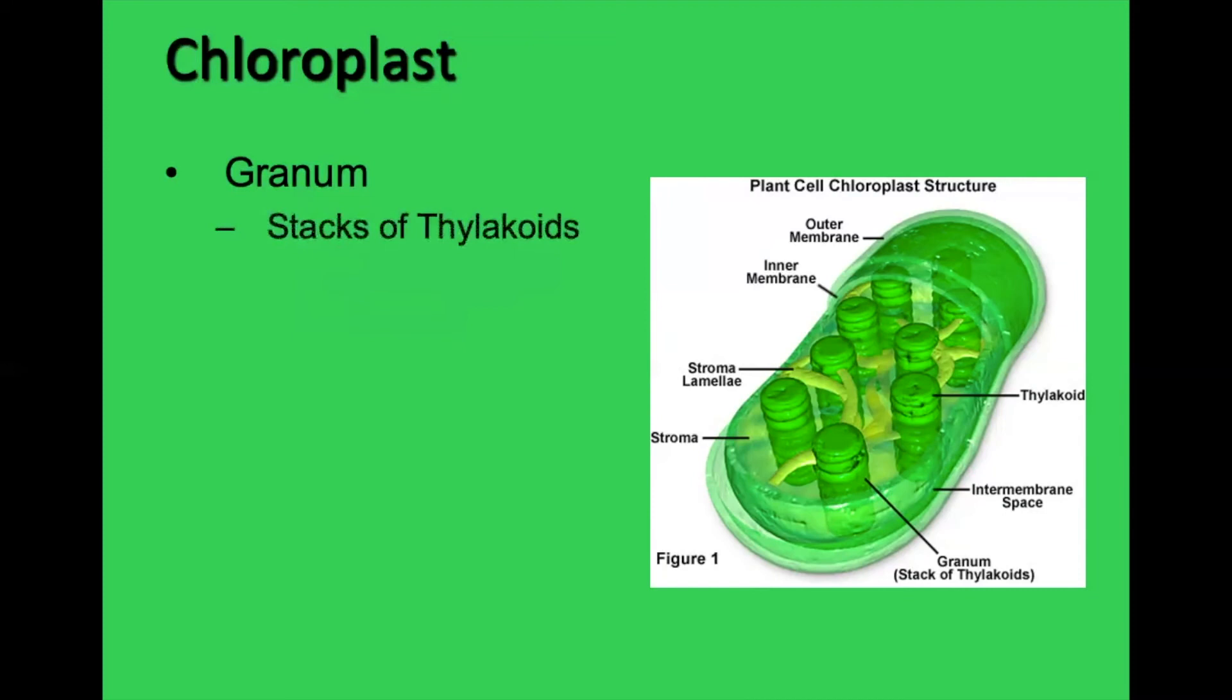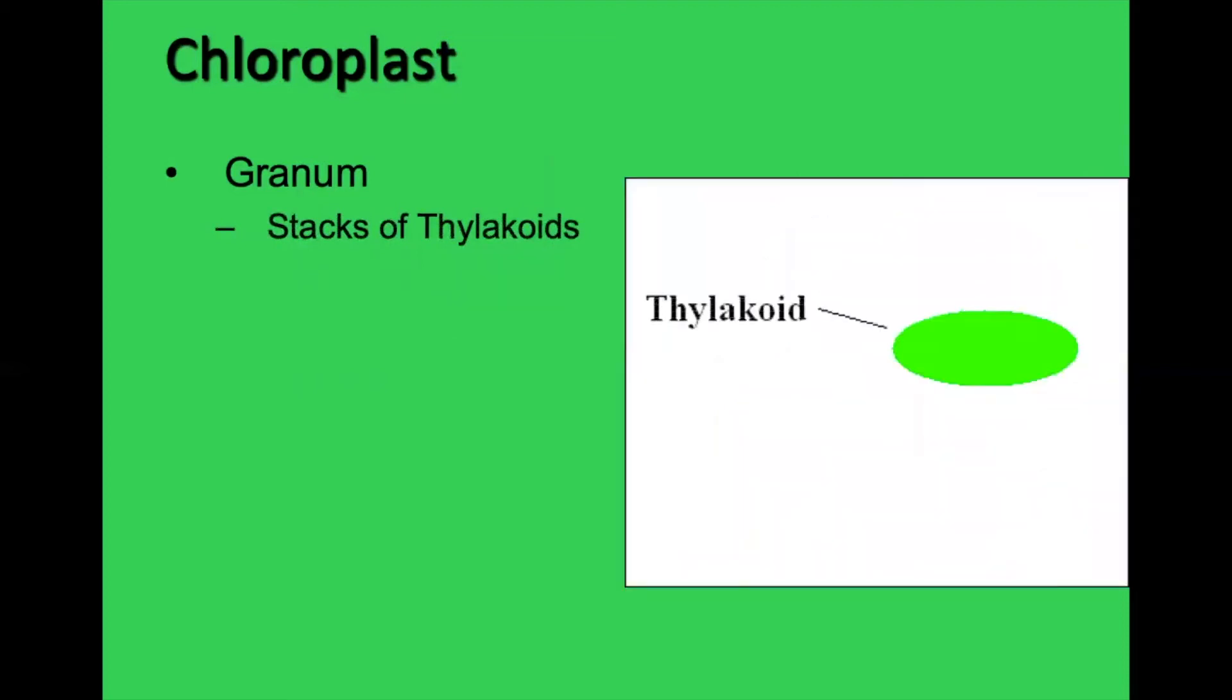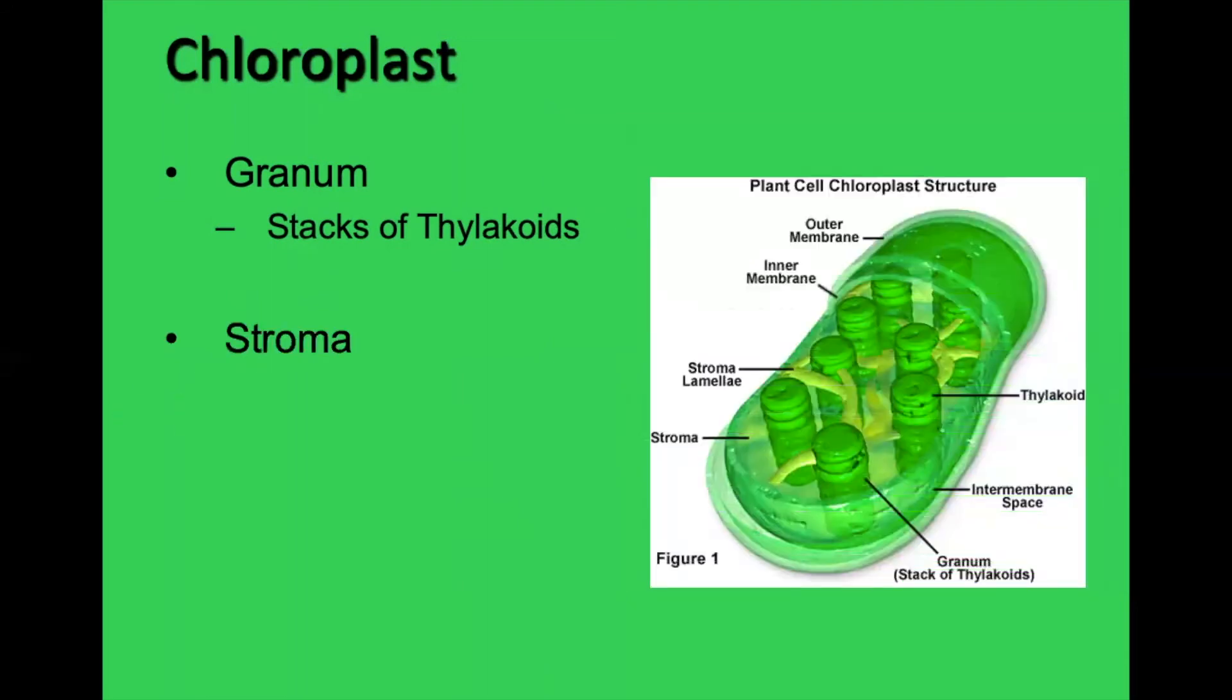And then granum is just the terminology. It's a stack of thylakoids. So here's one thylakoid and here's a granum. There's your one thylakoid. And now we have a granum of thylakoids. It's just a fancy word for a group. Like you have a school of fish or pack of wolves, a flock of birds. We have a granum of thylakoids. And the stroma is all of this empty space in between the grana. It's not actually empty. It's full of liquid. That space outside the thylakoid is where some major chemical reactions are going to take place. So some take place inside the thylakoids and some reactions take place outside the thylakoids, in the stroma.